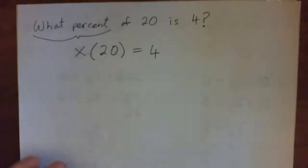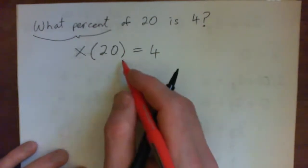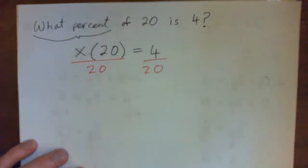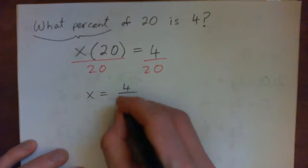And now I can solve for X. X has been multiplied by 20, so let's divide by 20. And we get X equals 4 over 20.